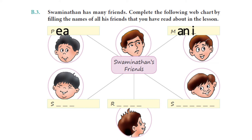And whose name starts with S and has four letters? That's Somu — S, O, M, U. Somu.